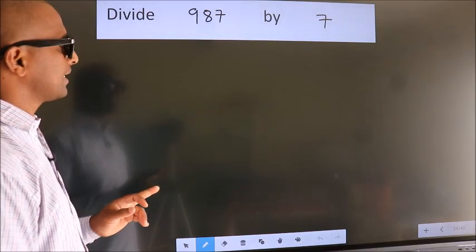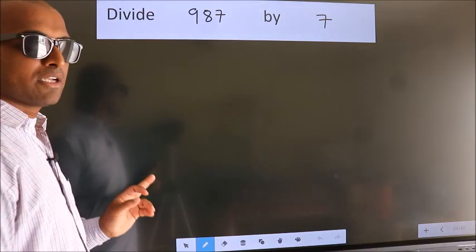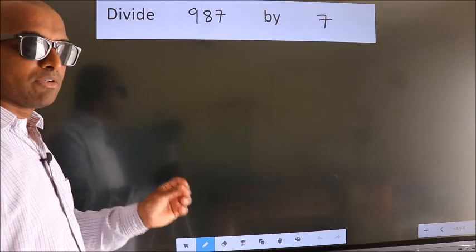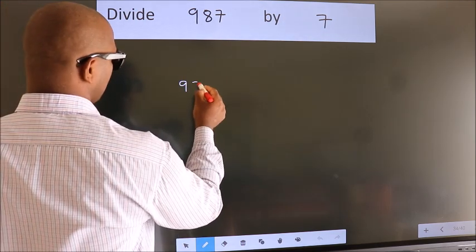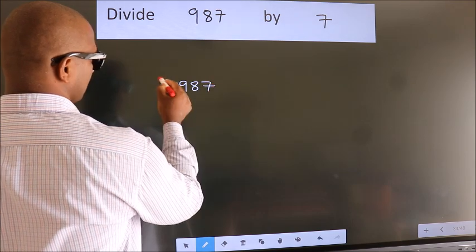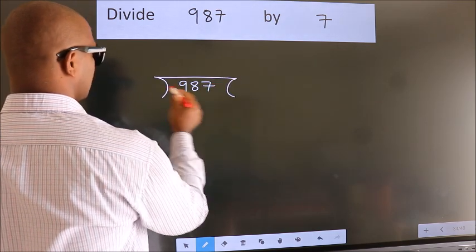Divide 987 by 7. To do this division, we should frame it in this way: 987 here, 7 here.